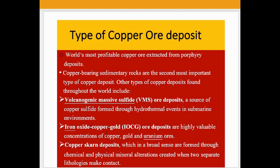These ore deposits are highly valuable concentrations of copper, gold, and uranium ores. Copper skarn deposits, in a broad sense, are formed through chemical and physical mineral alteration created when two separate lithologies make contact. This is also an important type of copper deposit found in skarn word distribution.